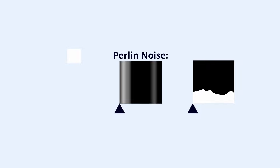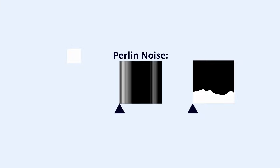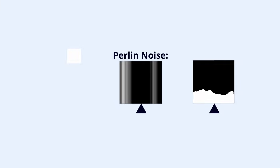However, using this method, points can only move up or down, so this means that we will never get any overhangs or cliffs. So to fix this issue, we can do another pass with Perlin noise. But now instead of shifting points up or down, we can shift them left and right. This causes our terrain to deform a little bit, creating these nice cliffs and overhangs.